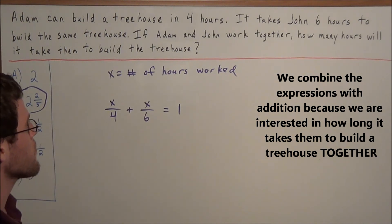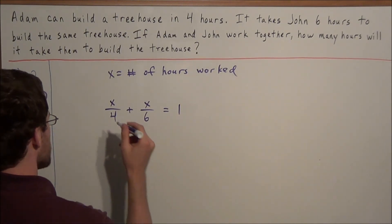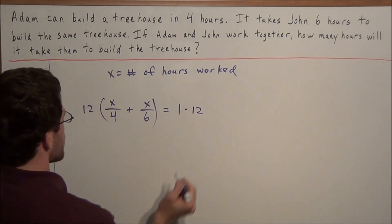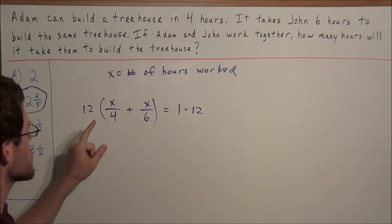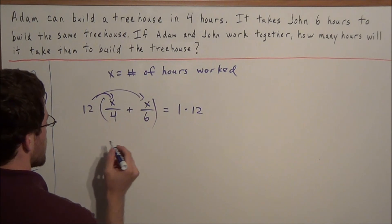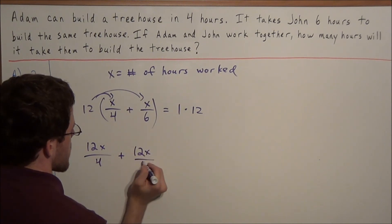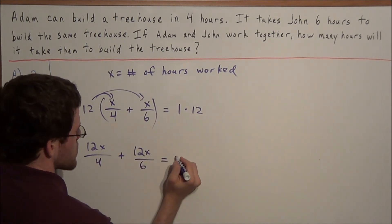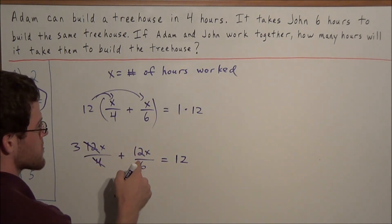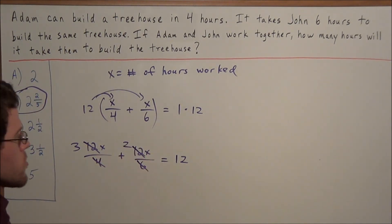Now by solving for x, we'll have found how many hours it will take the two of them working together to build one house. So now when we multiply both sides by twelve, and the reason we're multiplying both sides by twelve is twelve is the least common multiple of four and six. When we distribute, we have twelve x over four plus twelve x over six equals twelve times one, which is twelve. So now twelve divided by four is three, and twelve divided by six is two.